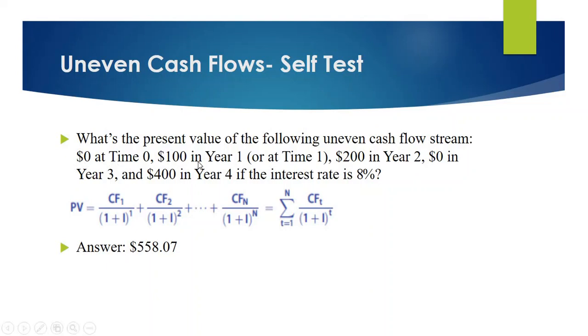So your cash flow which is zero at time zero... will be 558.07. So that's all about uneven cash flow.